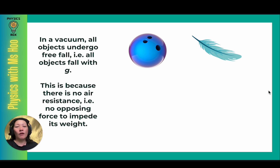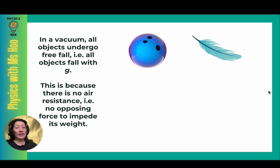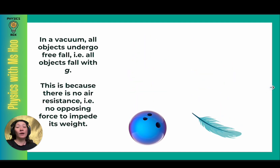If you'd like to watch a video of objects falling in a vacuum chamber, I put a link in the description below which links to BBC's video featuring Brian Cox. He visited a facility where they dropped a bowling ball and a feather — first in air and then in a vacuum chamber. You'll find that when the objects fall in the vacuum chamber, the bowling ball and the feather fell at exactly the same rate throughout the entire motion, because there is no air resistance, meaning there's no opposing force to impede the weight.